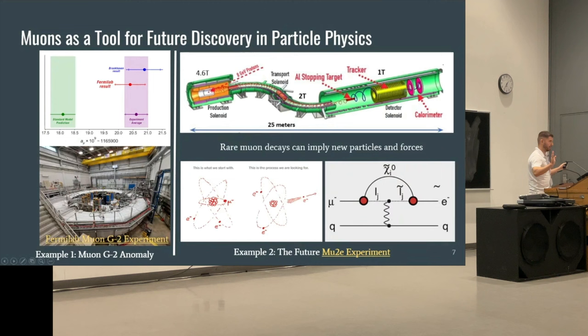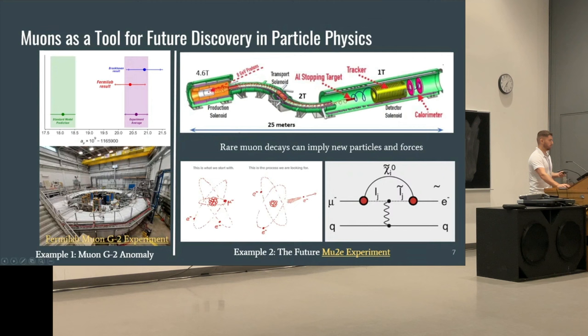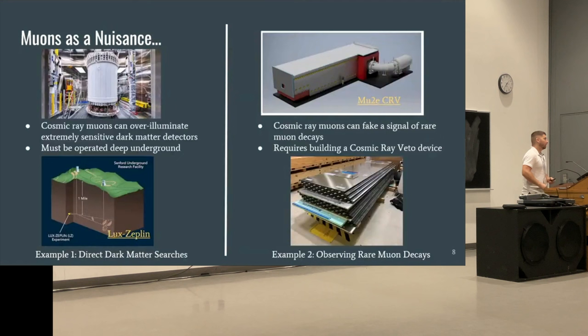In less than two weeks, the g-minus-2 experiment will release their latest results — I suspect they might reach five-sigma discovery. The second type of experiment looks at muon decays: the Mu2e experiment creates muons, traps them into atoms, and waits for them to decay. Certain rare decays not allowed by the standard model, if measured, would imply extra particles or forces such as supersymmetric particles. The point is that muons themselves can be a tool for discovery beyond pyramids.